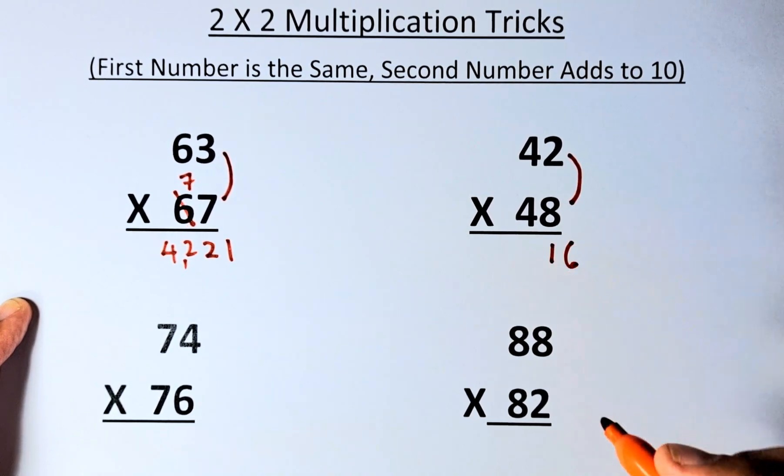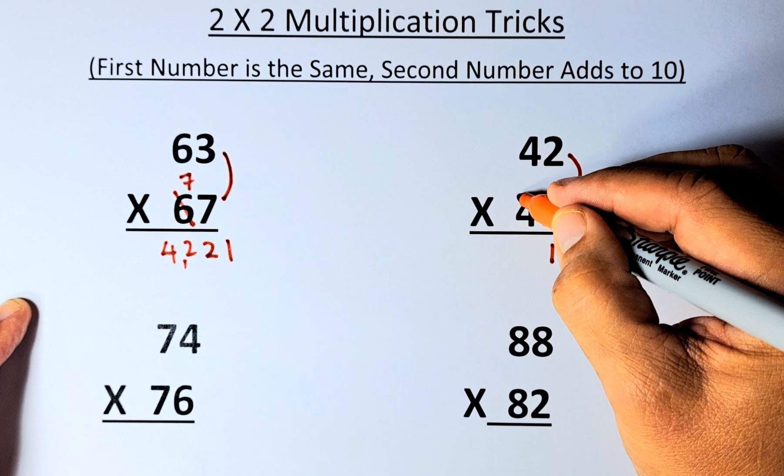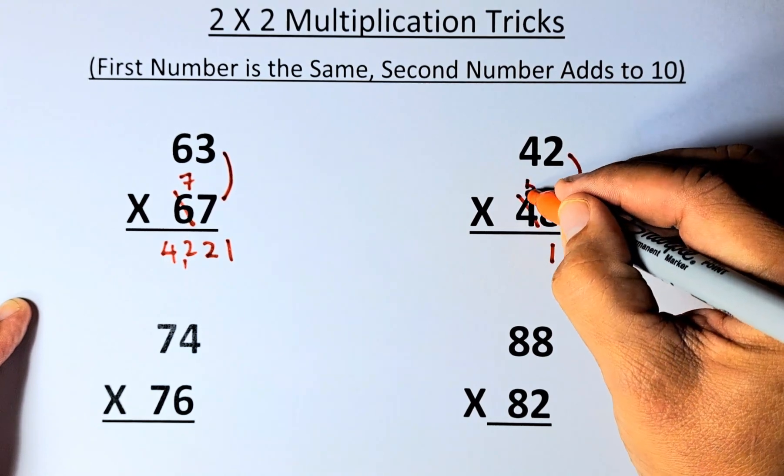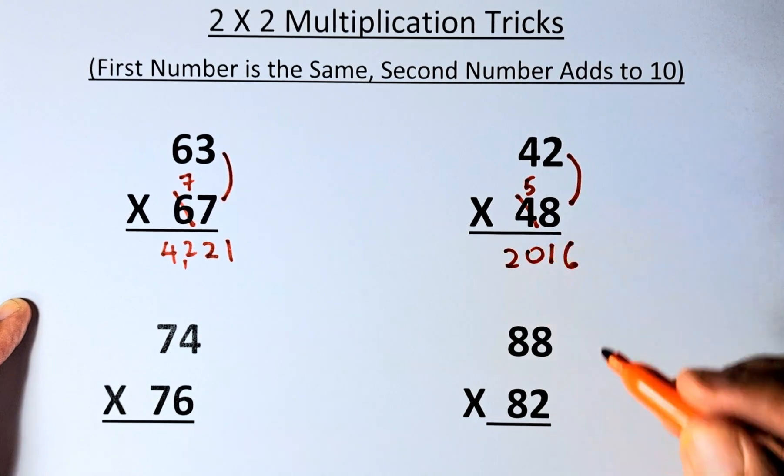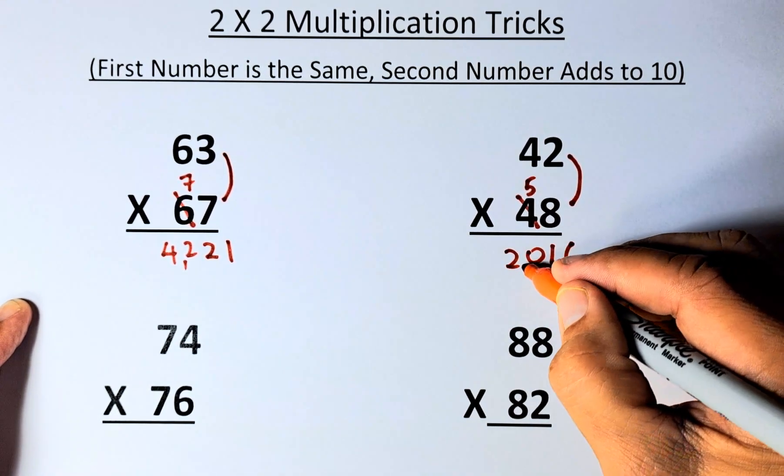we write 16 and then 4 x 4, but instead of 4, we're going to increase the second 4 by 1, it becomes 5. So 4 x 5 is 20. So the answer is going to be 42 x 48 is 2,016.